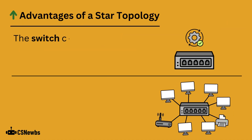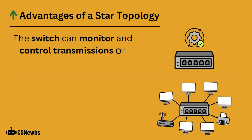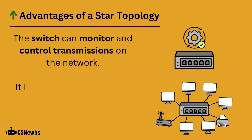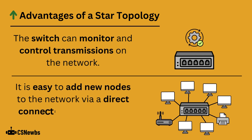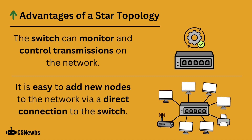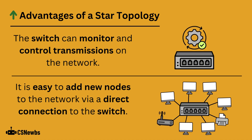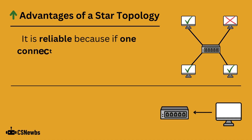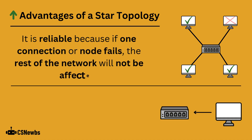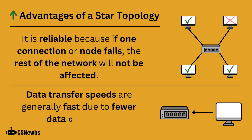An advantage of a star topology is that the switch can monitor and control transmissions on the network. Also, it is easy to add new nodes to the network via a direct connection to the switch. Star topologies are reliable because if one connection or node fails, the rest of the network will not be affected. Data transfer speeds are also generally fast due to fewer data collisions.